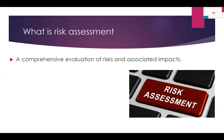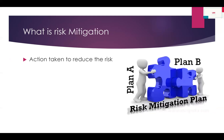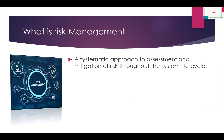What is mitigation? The action taken to reduce risk. I identify everything that could cause harm, then develop controls or systems so that when things are going to go wrong, I can control them before they become harmful. Actions taken to reduce risk are known as mitigations. A systematic approach to assessment and mitigation of risk throughout the system life cycle is known as risk management.